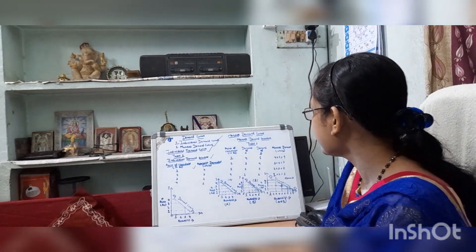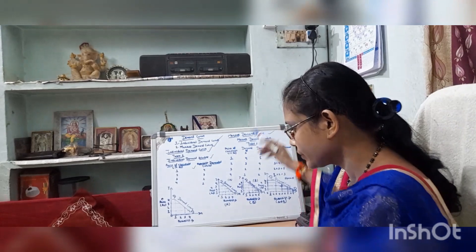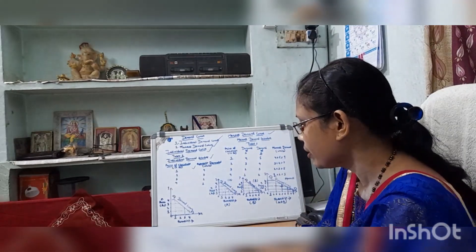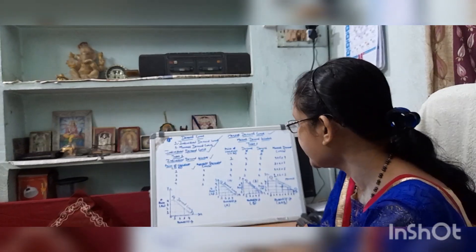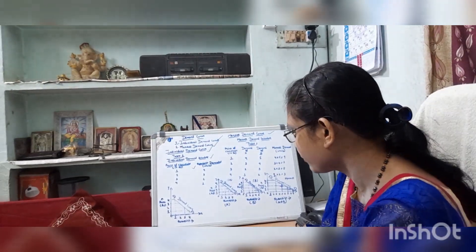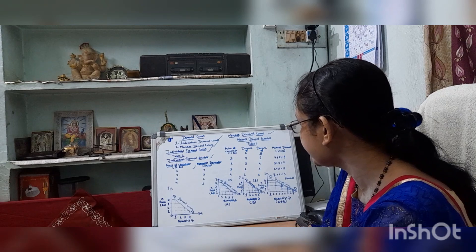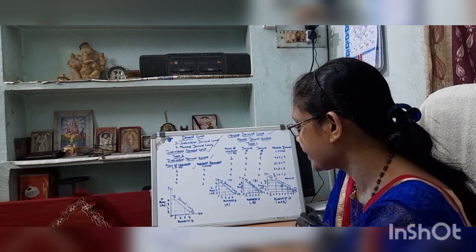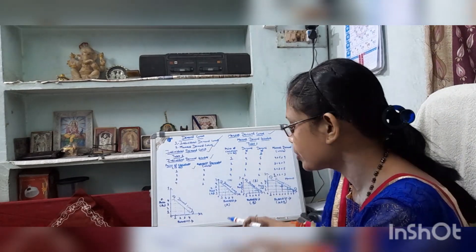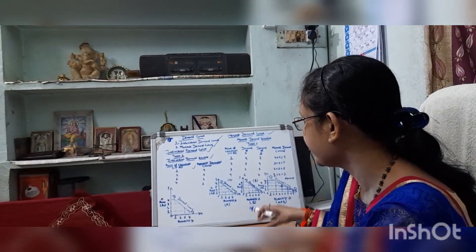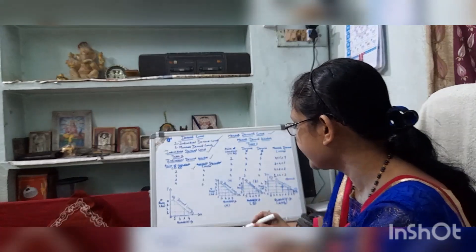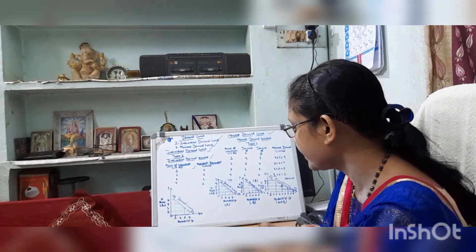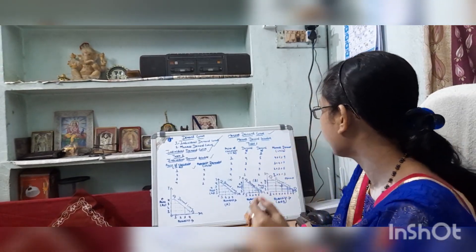Now I will discuss the market demand curve. The market demand curve is the horizontal summation of the individual demand curves. It represents the aggregate demand of all consumers in the market at different prices of a specific commodity.